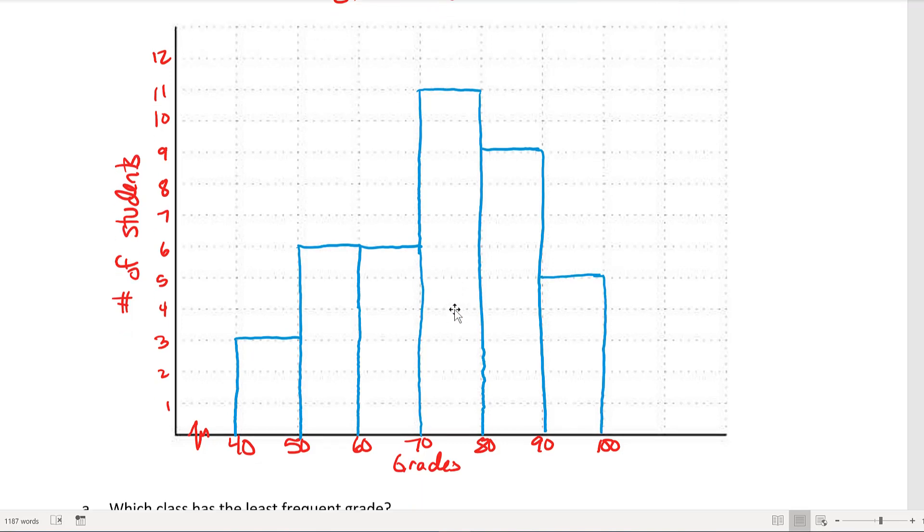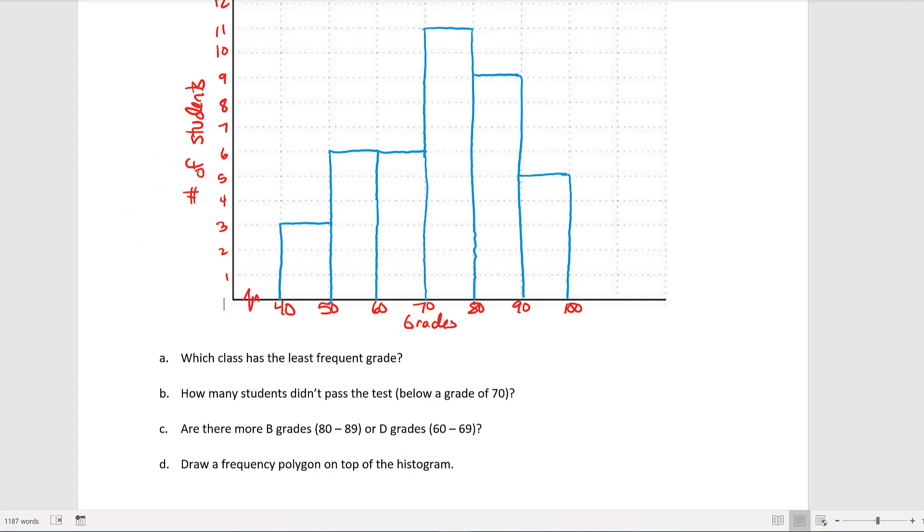So which class has the least frequent grade? Well, the least frequent grade class happens to be between 40 and 49, and I can see that really clearly because it's the lowest bar.